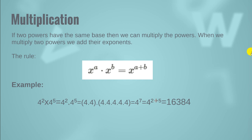For example, we have the expression 4 raised to the power 2 multiplied by 4 raised to the power 5. The bases are the same, so we add their exponents: 2 and 5, giving us 4 raised to the power 2 plus 5, which equals 4 raised to the power 7, and that gives us the answer 16,384.